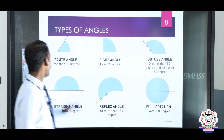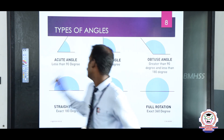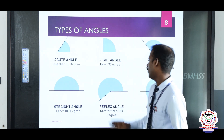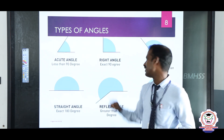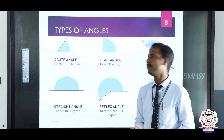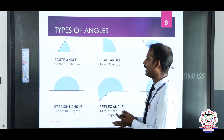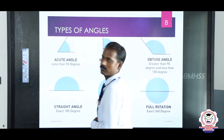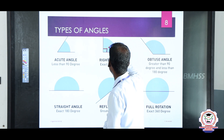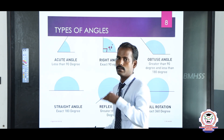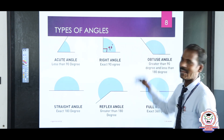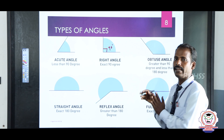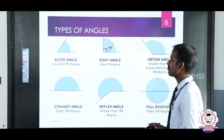Types of angles: the first one is acute angle — less than 90 degrees is called an acute angle. Next, right angle — exactly 90 degrees is called a right angle. Here, exactly 90 degrees is called a right angle. And then next: obtuse angle — greater than 90 degrees and less than 180 degrees is called an obtuse angle.